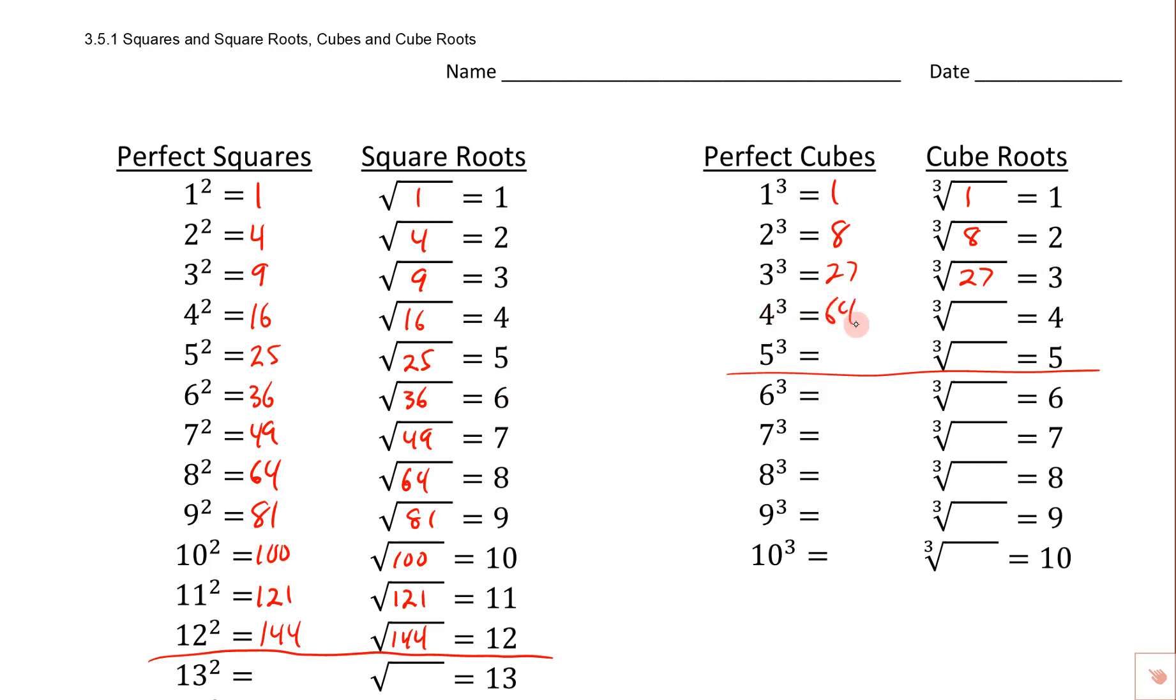And 4 cubed is 64, the cube root of 64 is, we're right back to 4. And then we're going to take 5, we're going to cube it, we get 125, and that means if we take the cube root of 125, we're going to get right back to 5.